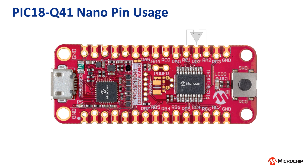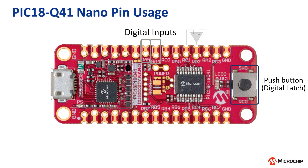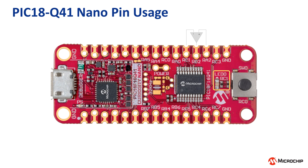This code example is designed to demonstrate some of the op-amp configurations possible on the PIC18Q41 family of microcontrollers. Pins RA5 and RA4 are weak pull-up digital inputs that select a configuration, while the push button on RC0 is used to apply the changes. The LED on RC1 blinks a number of times to indicate the current configuration.